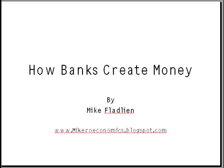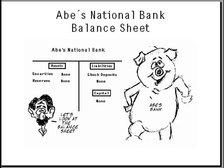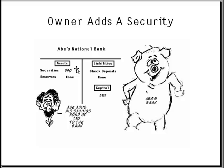Let's learn how banks create money. We'll begin by looking at Abe's National Bank and Abe's balance sheet. Abe lists assets — things that he owns — on the left hand side, and liabilities — things that he owes — on the right hand side, along with the capital, or how much the business is worth. Since Abe owns nothing and owes nothing, his bank is worth nothing.